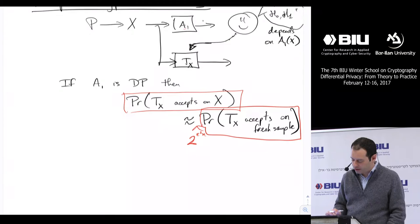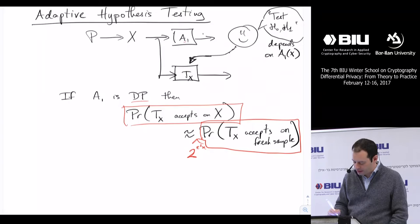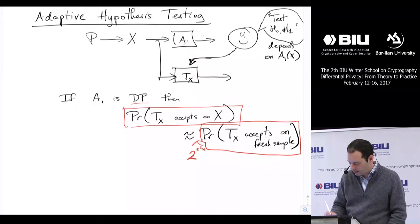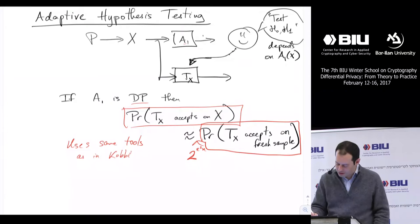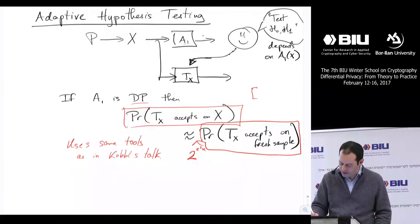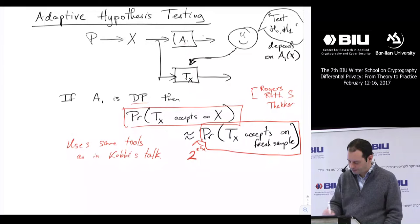With differential privacy, the probability with which your test will accept will be inflated by a factor on the order of 2^(ε²N) — a large number, but one which is nevertheless bounded and computable. So if you understand the quantity you'd normally reason about for a hypothesis test, you can get a handle on what you get when doing your test adaptively. This is Rogers, Roth, Smith, and Tucker.